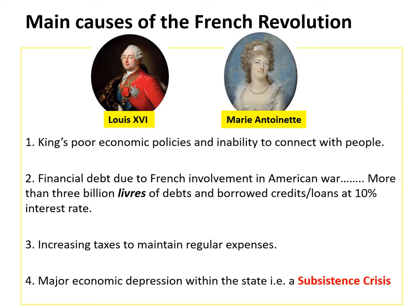The war added more than one billion livres to a debt that had already risen to more than two billion livres. Livres was the unit of currency in France, which was discontinued in 1794. France had more than three billion livres of debt, and therefore the state had to borrow credit from lenders at 10% interest rate. To meet its regular expenses — such as maintaining an army, the court, and running government offices or universities — the state was forced to increase taxes.